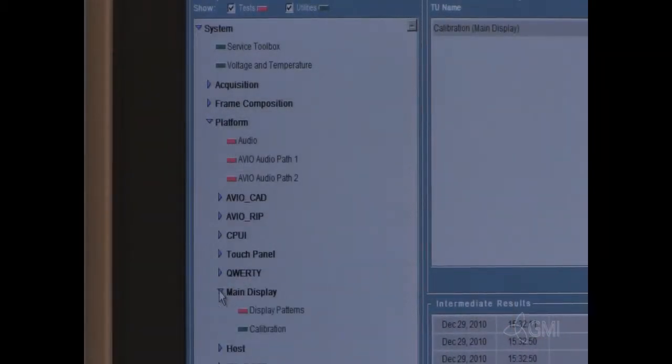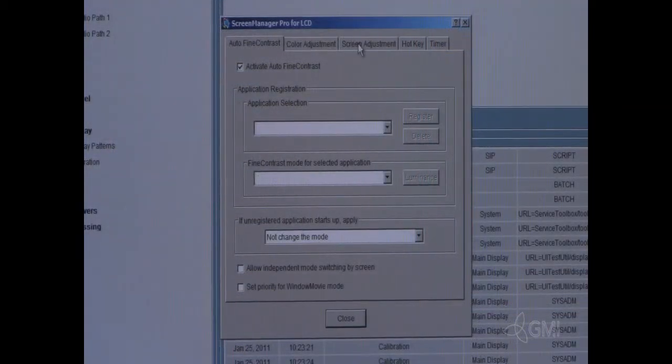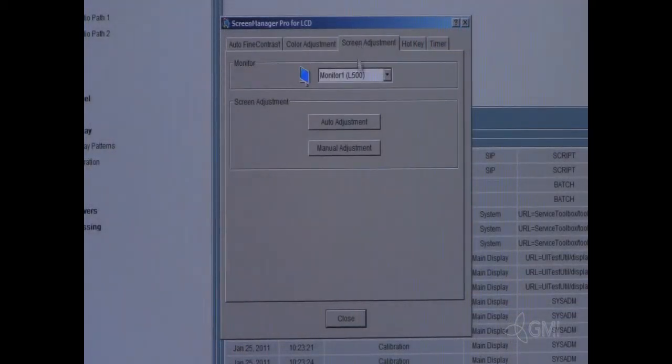Select main display, then calibration, and execute. Select screen adjustment, then select auto adjustment. The monitor will then begin to auto calibrate.